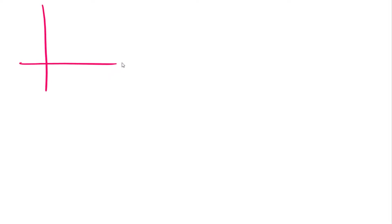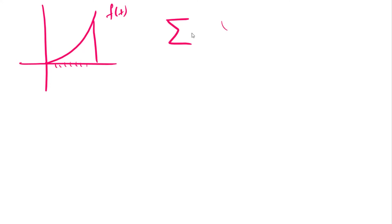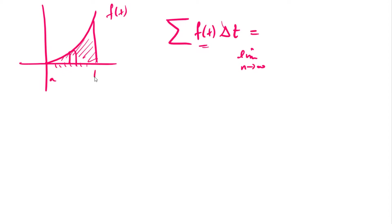In the last video, we showed that using the process of Riemann sums, we could take some graph f of t and cut it up into rectangles. We compute the heights of rectangles and multiply them by little increments. After we take a limit as the number of rectangles runs away to infinity, this turns into an exact expression for the area between a and b underneath the curve f of t. Its symbol is the integral from a to b of f of t dt, because that symbol literally means sum.